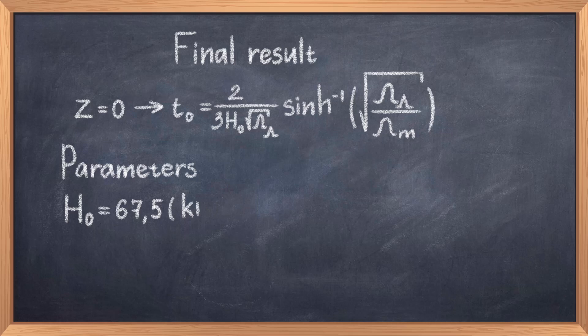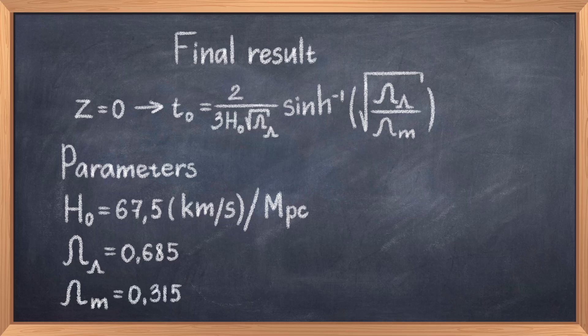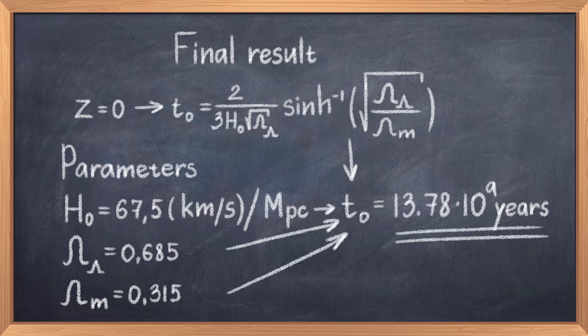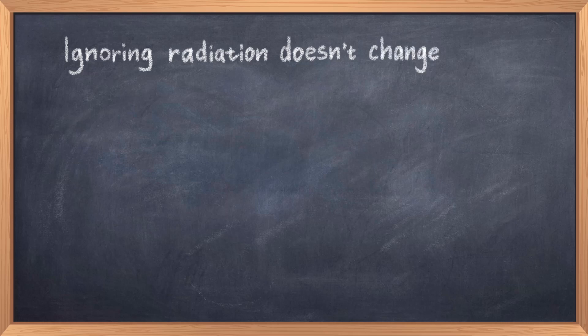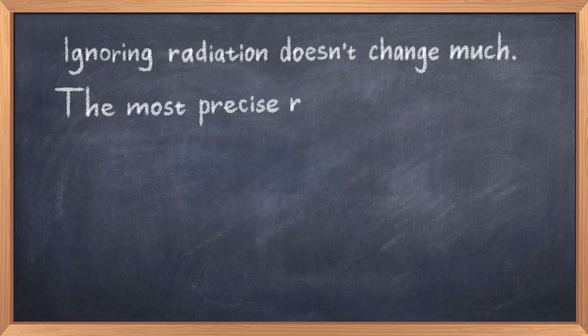The final thing we need is to pick the latest values from the Planck data from 2018. Here we find that H₀ = 67.5 km/s/Mpc, Ω_m = 0.315, and thus Ω_λ = 0.685. If we plug in these numbers, we obtain the age of 13.78 billion years, which is the widely accepted value. Finally, we can discuss the approximation of ignoring radiation. Since the radiation density today is around 10⁻⁴, including it doesn't really change this result significantly. A more refined value would give 13.772 billion years with uncertainty around 40 million years, so we got within the uncertainty ignoring radiation.